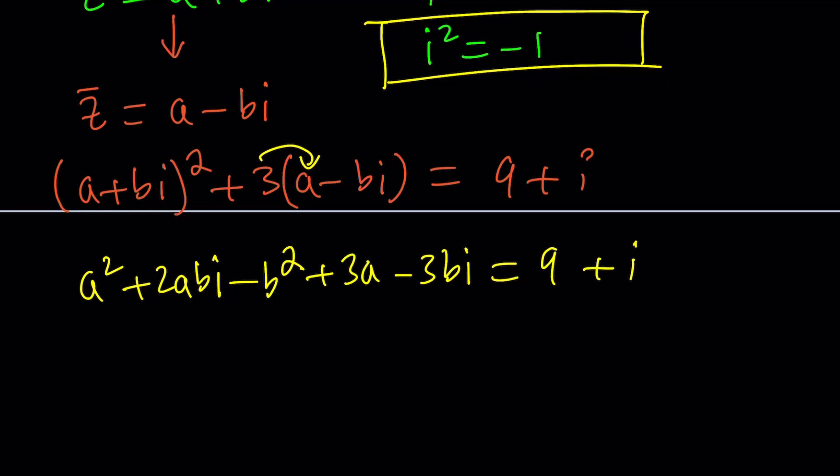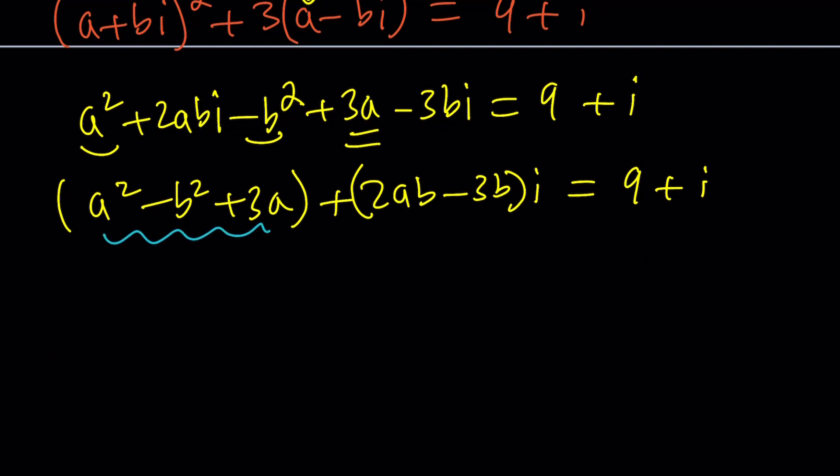Let's arrange these terms. A squared minus B squared plus 3 A, those are the real parts. Plus the imaginary part is 2 A B minus 3 B and that's equal to 9 plus I. Now if you compare the real parts with real parts you're going to notice that this equals 9 and this equals 1 because that's 1 I.